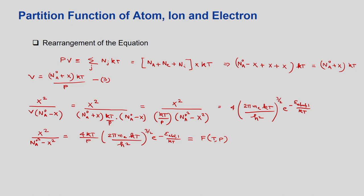Defining a dimensionless variable Y = X/NA0, and substituting into the expression X²/(NA0²−X²) = F, we get Y² / (1−Y²) = F, which gives Y = √(F/(1+F)). This is the correlation between the function F and Y, where Y represents the degree of dissociation of the atom.